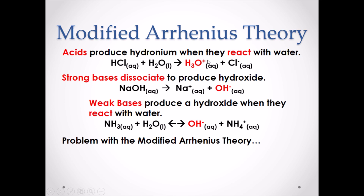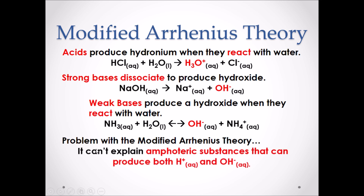Still, the Modified Arrhenius Theory had problems. One of the most common issues was that it could not explain amphiproteric substances — substances that can produce both H+ and OH- in water. An amphiproteric substance is one that can act as either an acid or a base.